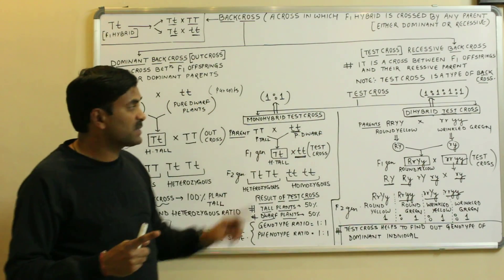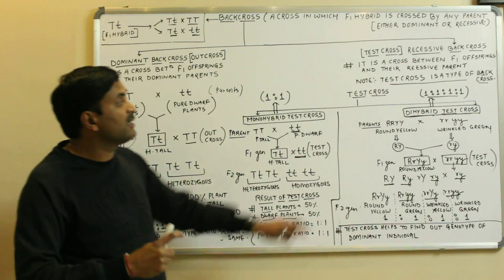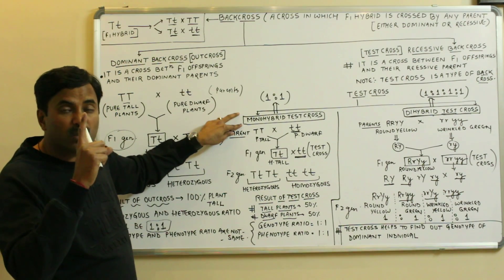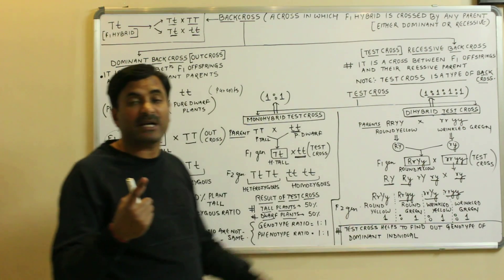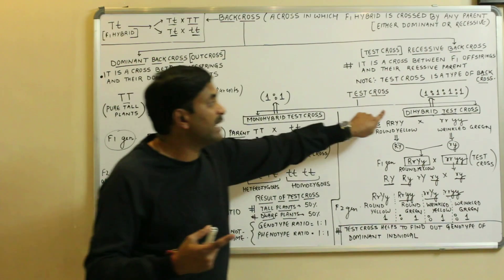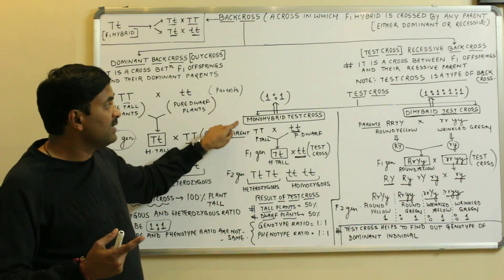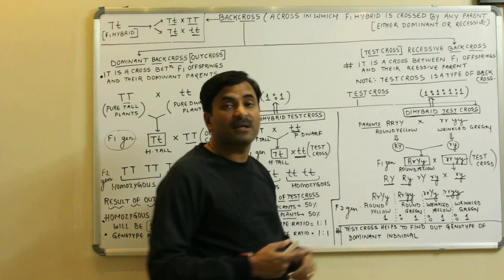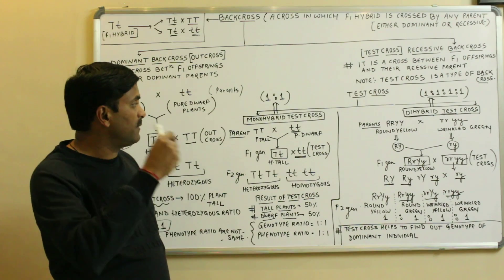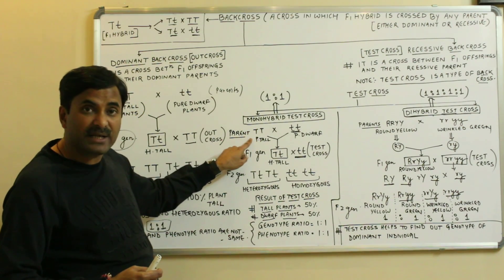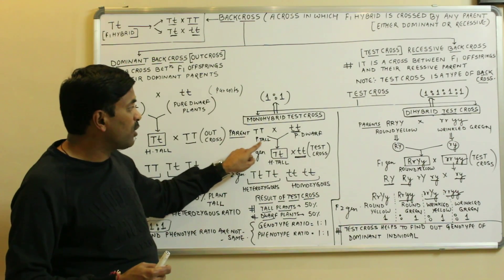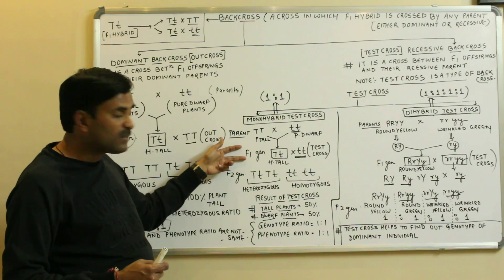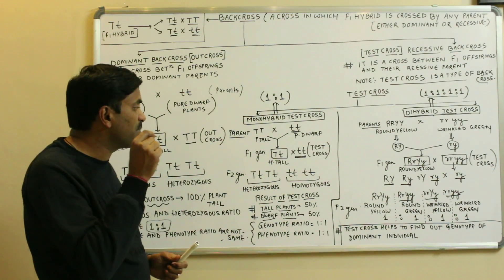The test cross may be of two types: one is the monohybrid test cross and another is the dihybrid test cross. In a monohybrid test cross, one contrasting character is taken, while in a dihybrid test cross, two contrasting characters are taken. For the monohybrid test cross, I have taken tall and dwarf plants as parents. Crossing these gives the F1 generation — capital T small t — which is hybrid tall.